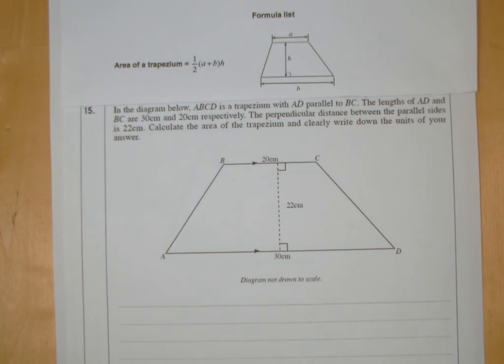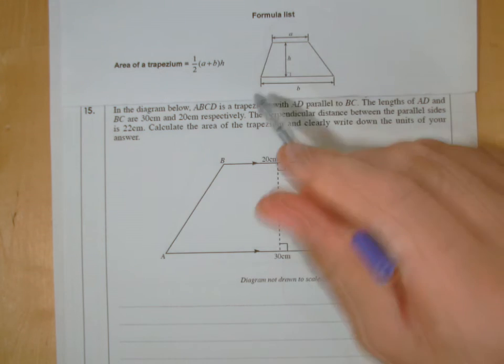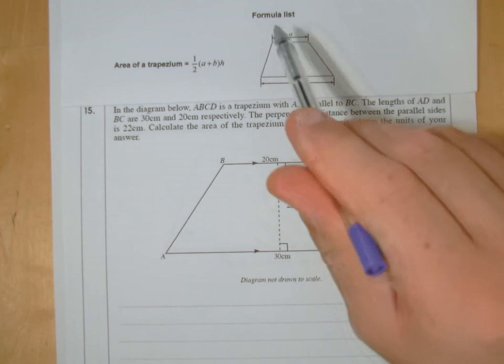You have to remember formulas for circles, like the area is pi r squared, circumference is pi d. You've got to remember that, but the trapezium, it's on page 2 on the formula list.